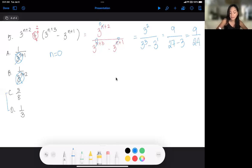9 divided by 24, but 9 is 3 times 3 and 24 is 3 times 8. So this will cancel out and this will be our answer letter C.